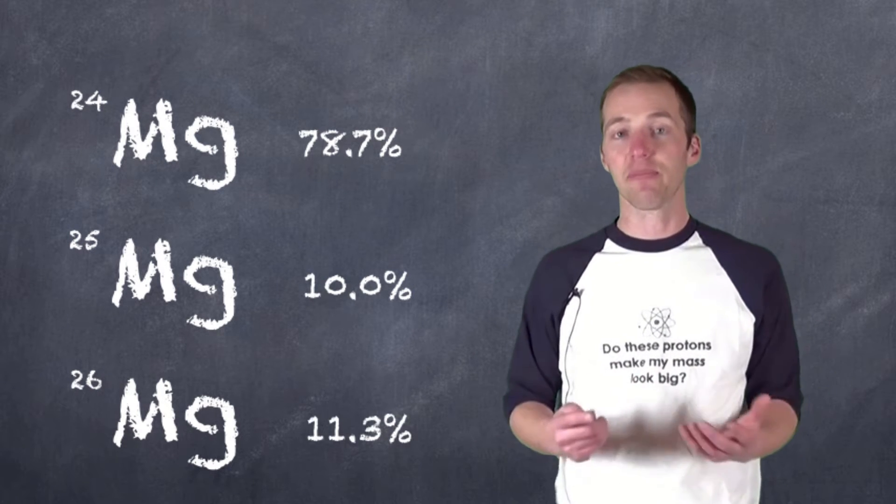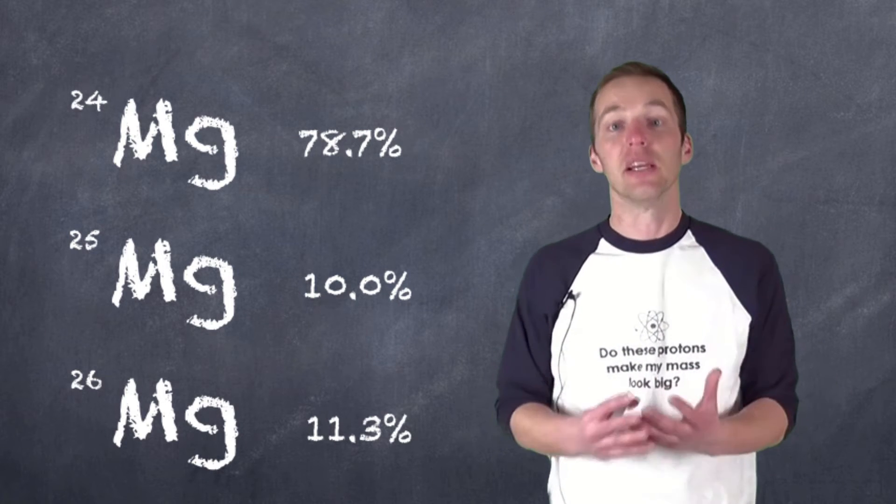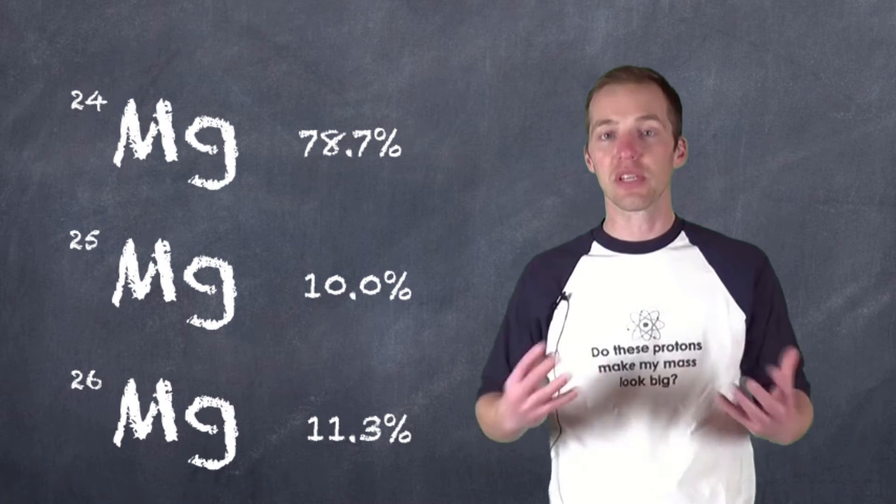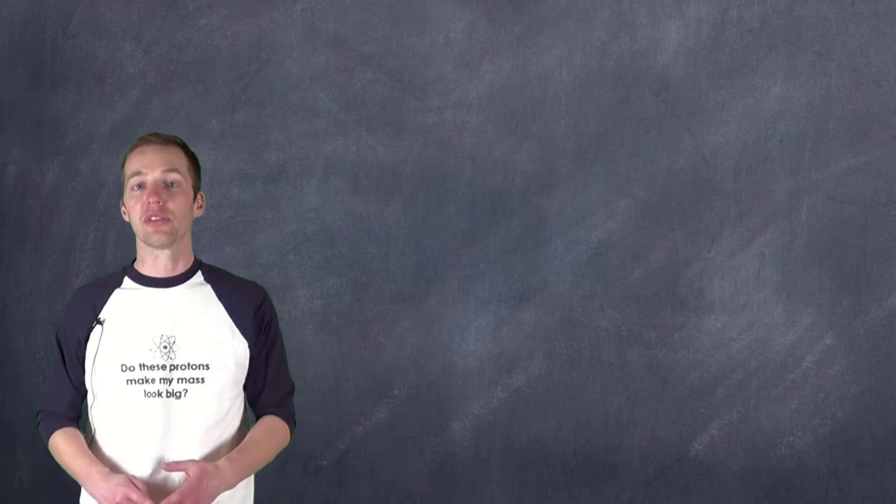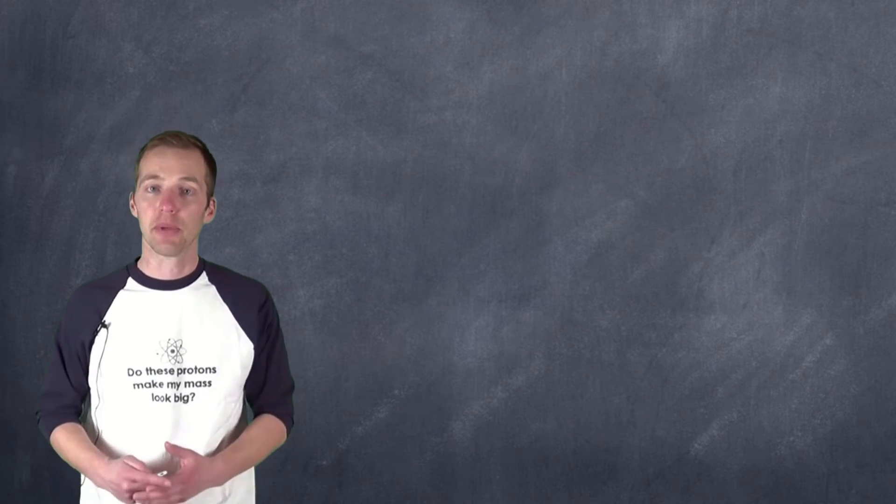So, in a given sample of magnesium, we were going to find, anywhere in the universe, these percentages of these isotopes. Now, how do we use this to establish these values that we see on the periodic table?